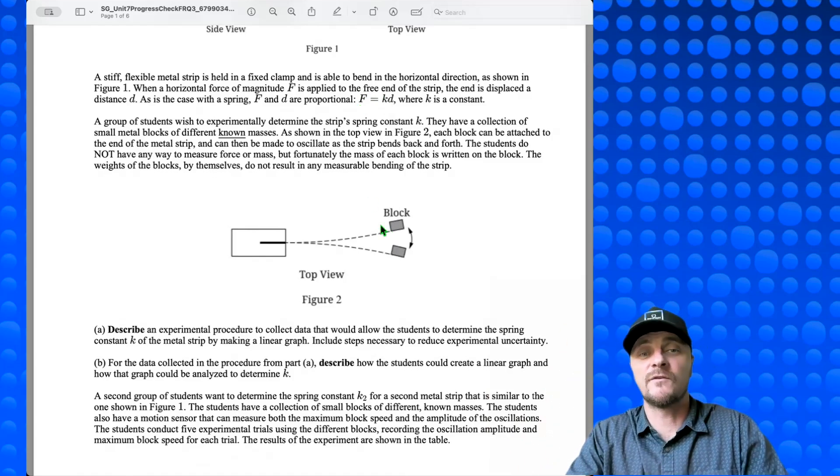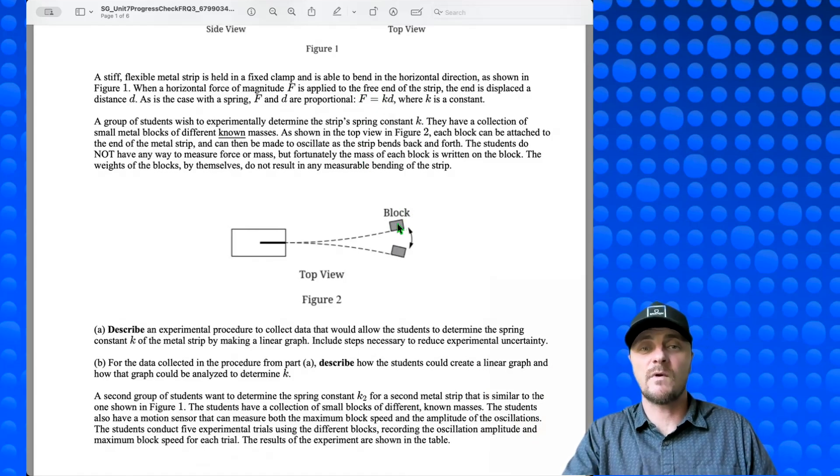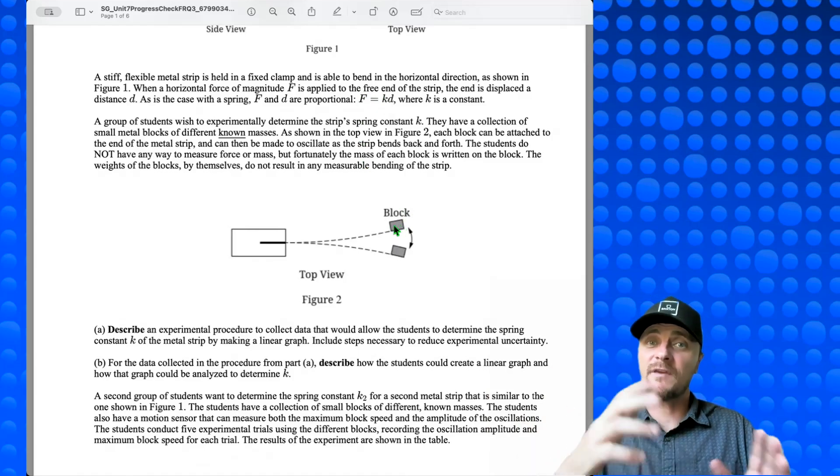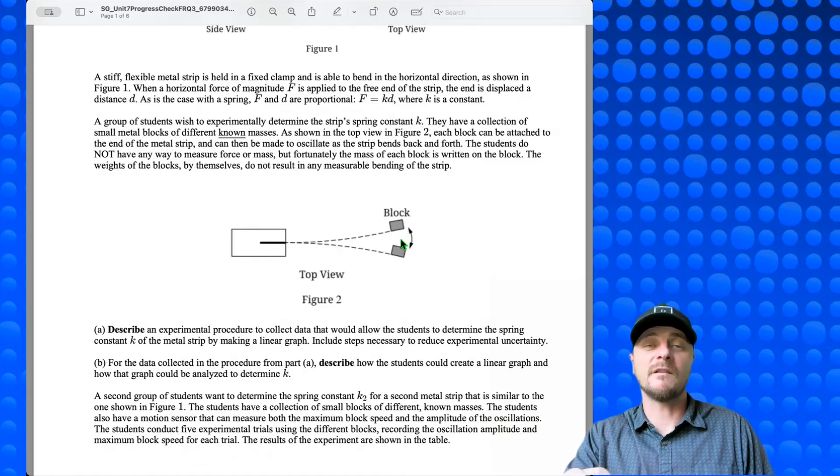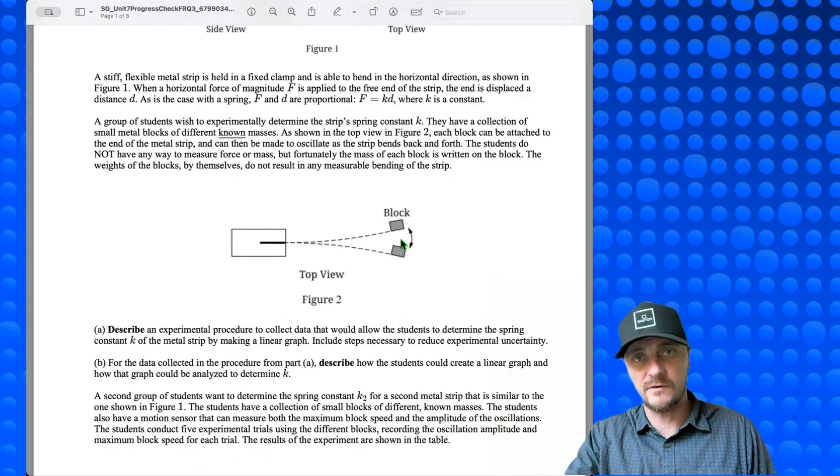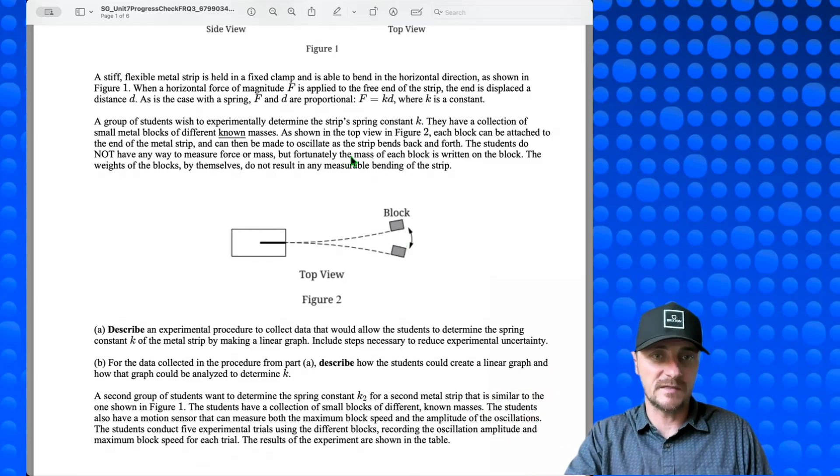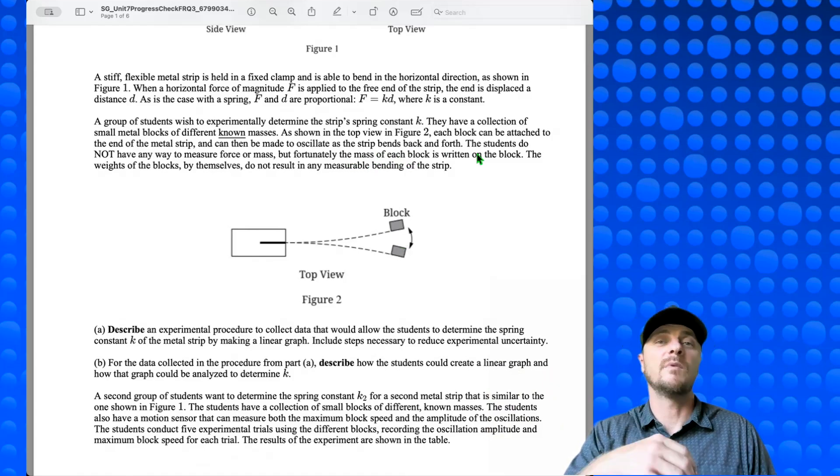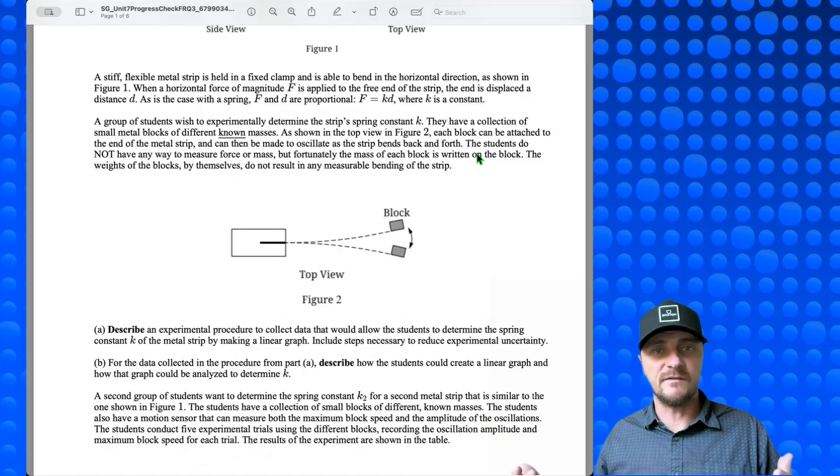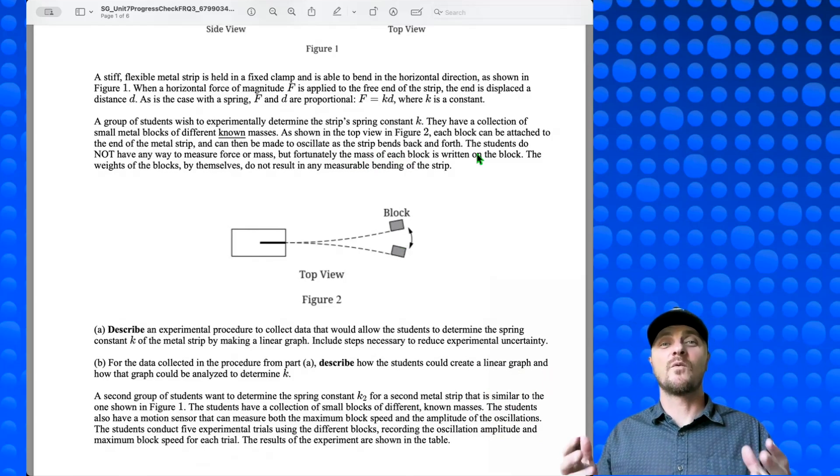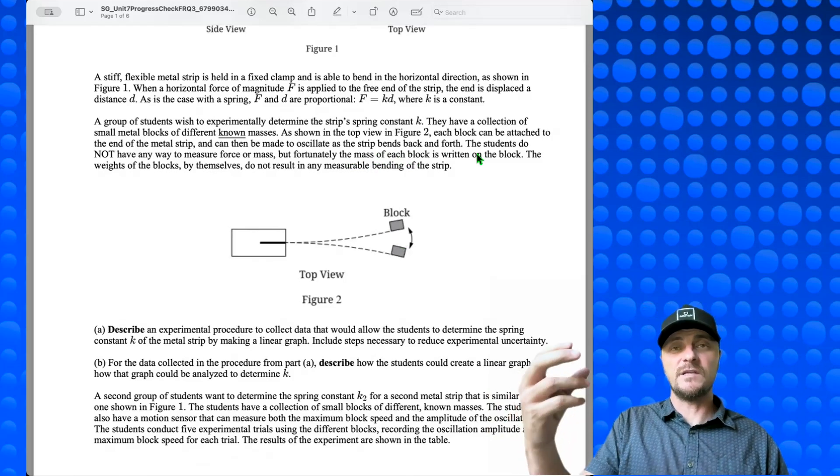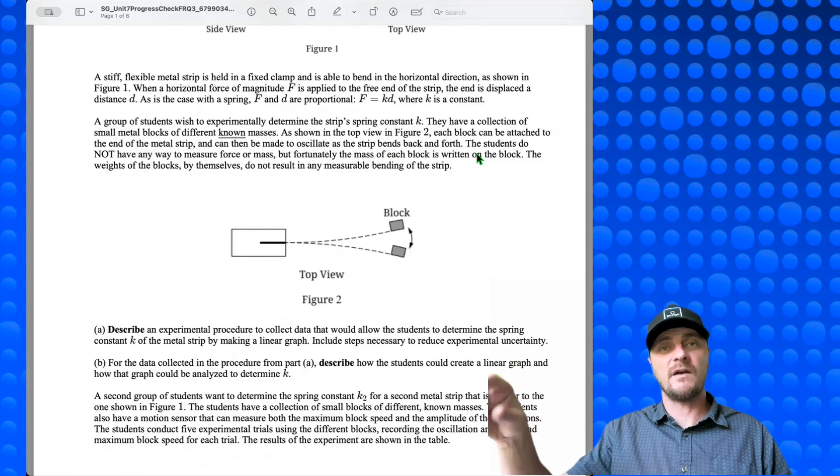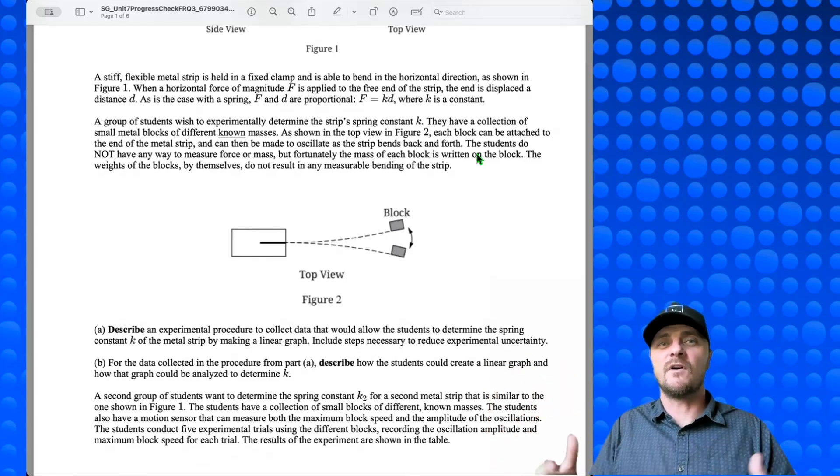Then you might think, hey, let's use energy. That should work. And at first thought, it seems to make sense. For instance, the block right now has elastic potential energy, one-half k, which we're looking for, times the amplitude squared. And we could certainly measure the amplitude with a ruler. But when the block comes through equilibrium, that elastic potential energy turns into kinetic energy, one-half mv squared. I do know my masses because it tells me each block has the mass written on it, but I don't know what that velocity is.